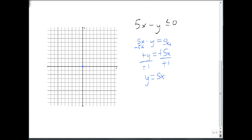Again, we start at the origin. We go up 5 over 1, up 5 over 1, down 5 back 1, down 5 back 1.